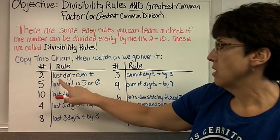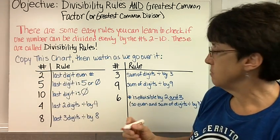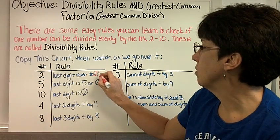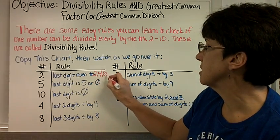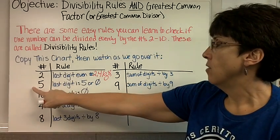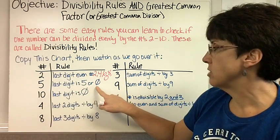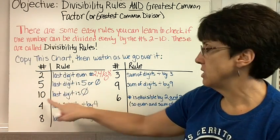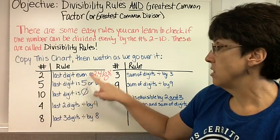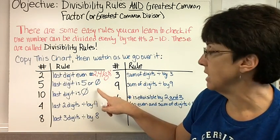For the number 2, the rule is the last digit is an even number. This means the number ends in a 2, 4, 6, 8 or 0. For 5, the rule is the last digit is a 5 or a 0. For 10, the last digit is a 0. These are the 3 easiest rules. That's why I grouped them not in order, but by ease.